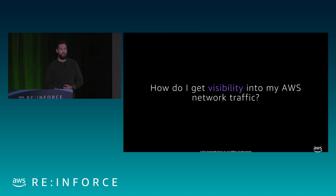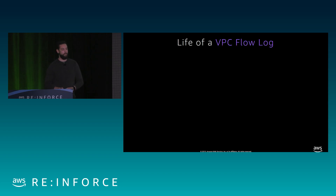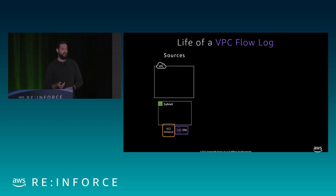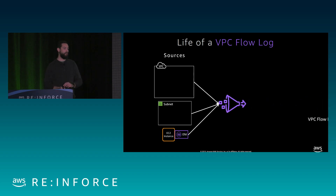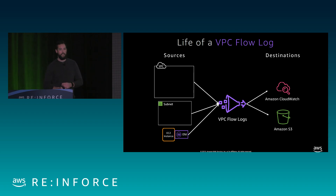So, how do we get visibility into your AWS network traffic? First we're going to start with VPC flow logs. A VPC flow log has three different sources: a VPC, a subnet, and an elastic network interface on an EC2 instance inside the VPC. Each one of these is a flow log source that we can enable. Our destinations can be Amazon CloudWatch or Amazon S3.